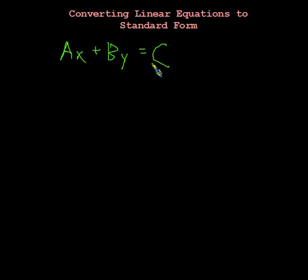We just kind of write it out this way so that we know that if we see something in this form with a number and then an x and then a number and then a y and then an equal and then a number, that's the standard form for a linear equation.